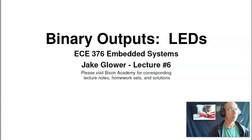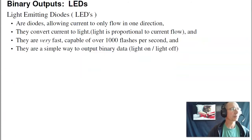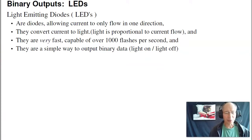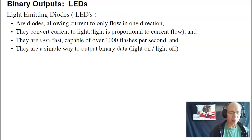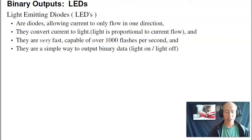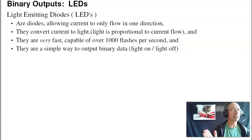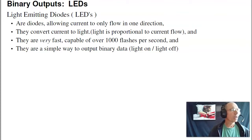Welcome to lecture number six for ECE 376 Embedded Systems: LEDs. LEDs are just terrific devices. They're bright, they're shiny, they're pretty — stuff that you can control with a microprocessor. Today we're going to look at how you drive an LED with a microprocessor. With some programs, you can build an LED flashlight that varies the color with an RGB LED, or have eight LEDs and turn them off sequentially for a dim or bright flashlight. You can even build a strobe light.